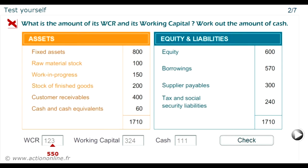WCR equals 550. The working capital equals the excess of fixed sources of funds compared to fixed uses of funds. It therefore equals equity, plus borrowings, minus fixed assets, which amounts to 600, plus 570, minus 800, which equals 370. Cash is equal to the difference between working capital and working capital requirement, which is 370 minus 550, equaling minus 180.